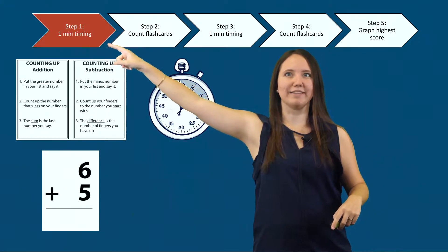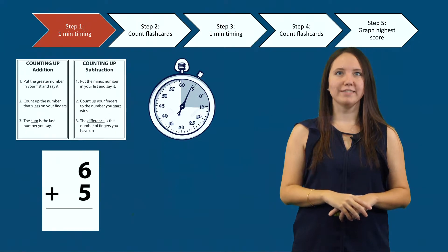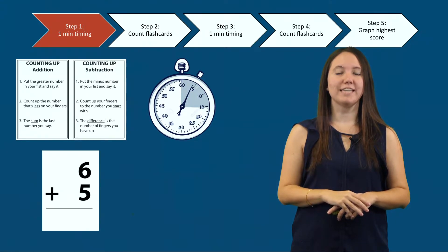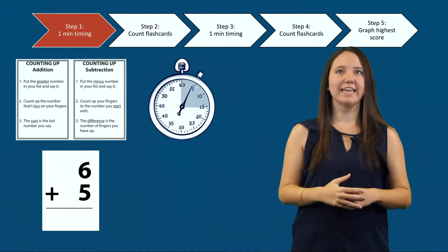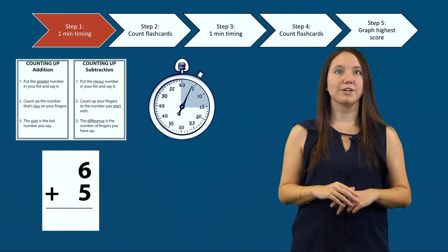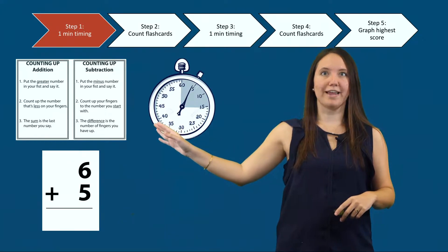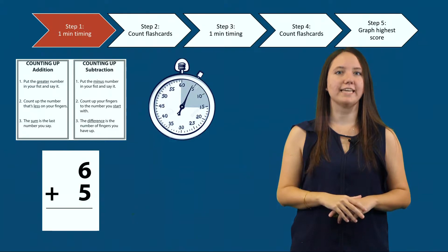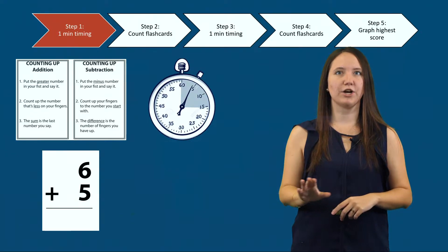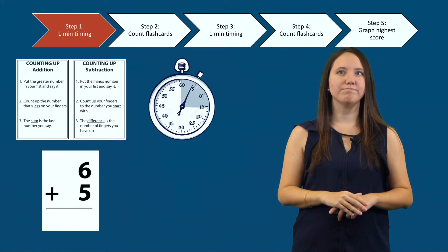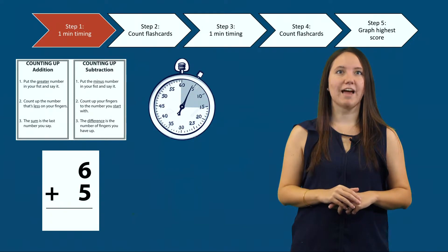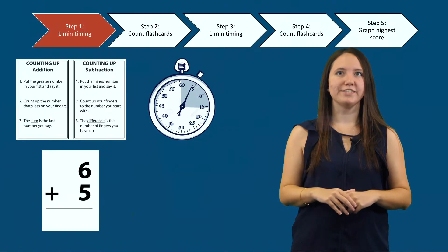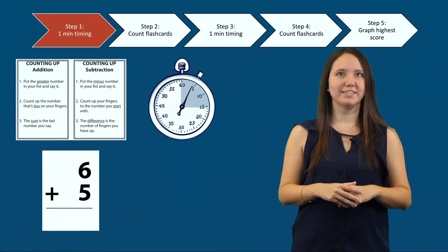Step one is a one-minute timing. The teacher begins by setting the timer for one minute. When the timer is set, the teacher says go. The student answers as many flashcards as he or she can until the timer beeps. The teacher holds up one flashcard at a time. If the student answers correctly, the teacher puts the flashcard in the correct discard pile. If incorrect, the teacher instructs the student to use the counting up strategies and assists until the student arrives at the correct answer. At the end of the minute, the teacher says stop. If you are not familiar with counting up strategies, you can view the video entitled Counting Up Addition and Subtraction, linked in the description.